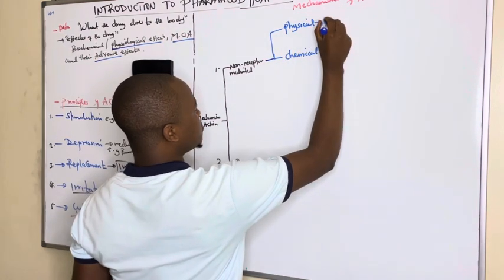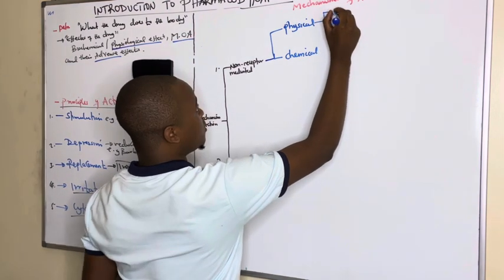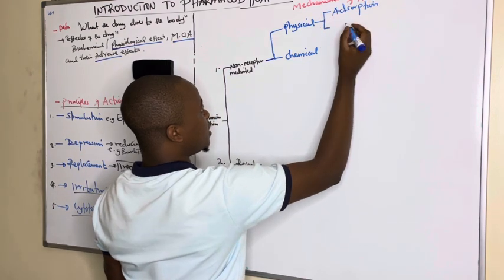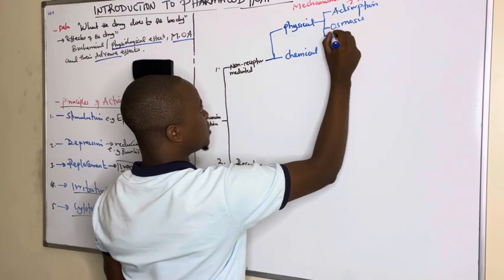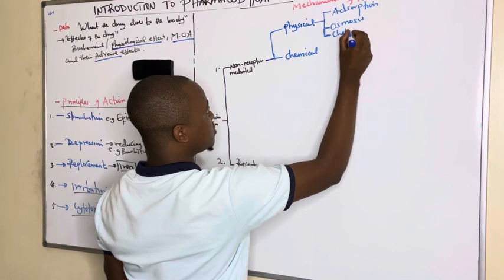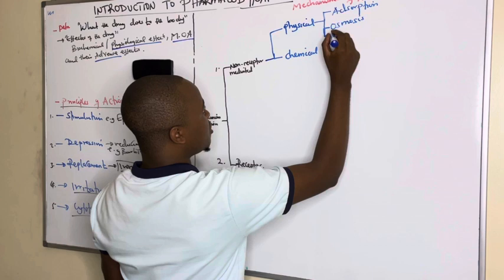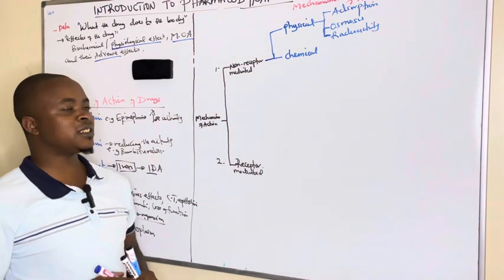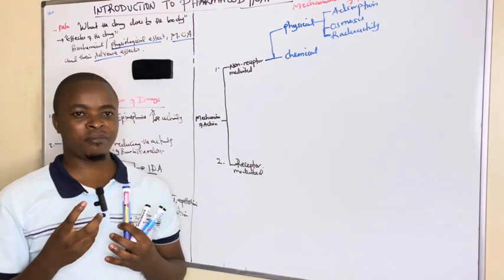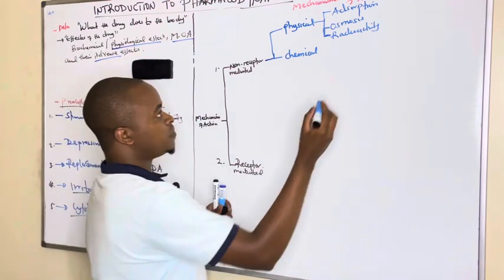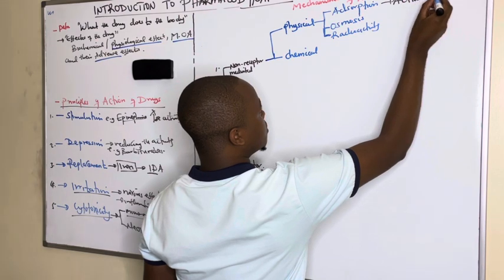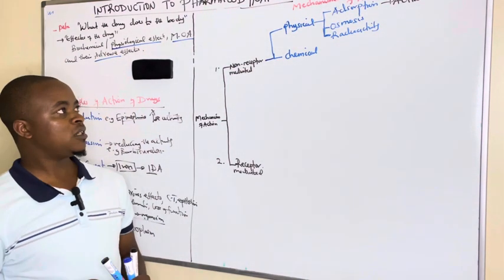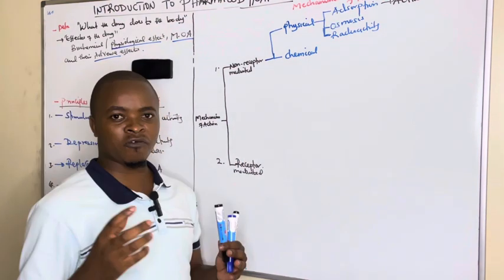Among the physical mechanisms, we have those that act by adsorption, those that act by osmosis, those that act by chelating, and radioactivity. Drugs can act by adsorbing toxins in the body — for example, activated charcoal, which is a good example of a drug that can adsorb toxins when given orally. We can give activated charcoal as a way of adsorbing molecules.